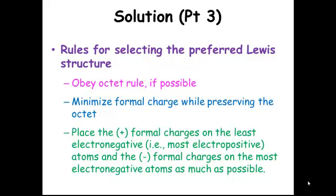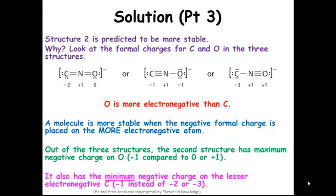After that, we're going to minimize formal charge while preserving the octet. And then finally, after you do those two steps, we're going to put the positive formal charges on the least electronegative element, also called the most electropositive. And we're going to put the negative formal charges on the most electronegative atoms as much as possible. So bottom line, structure two is predicted to be more stable.